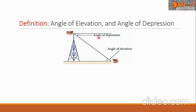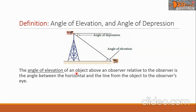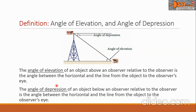Now let us have the formal definition. The angle of elevation of an object above an observer, relative to the observer, is the angle between the horizontal and the line from the object to the observer's eye. The angle of depression of an object below an observer, relative to the observer, is the angle between the horizontal and the line from the object to the observer's eye.